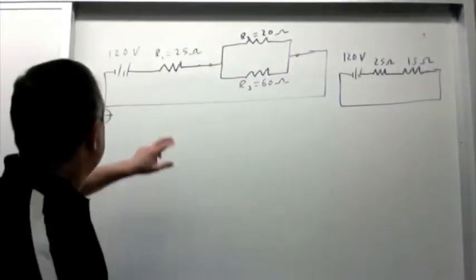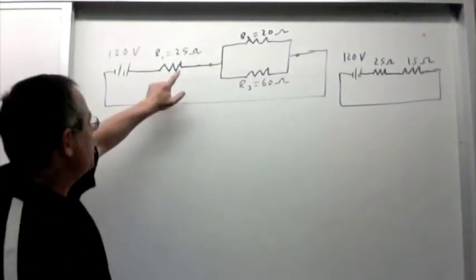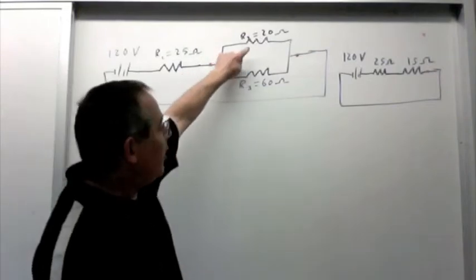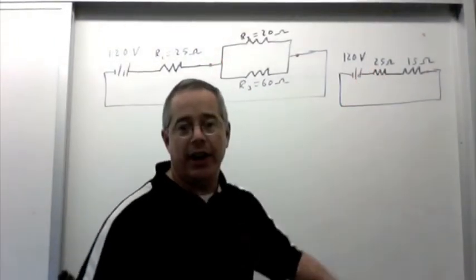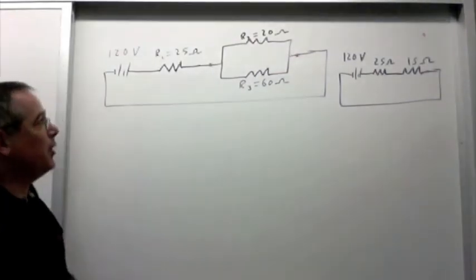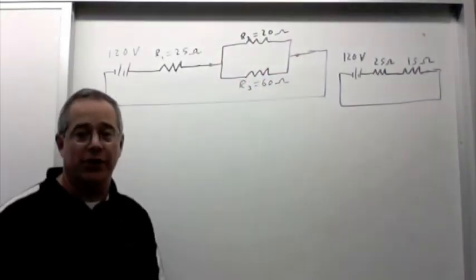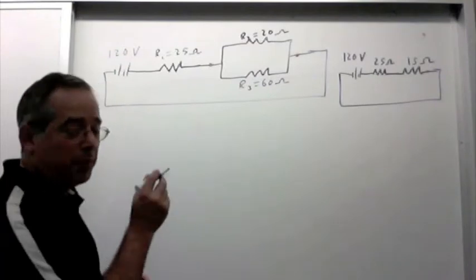I hope you can see this. This is a 120 volt battery, a 25 ohm resistor, and then in parallel, a 20 ohm and a 60 ohm resistor. Don't worry about this thing right now. The first thing to do is to find the total resistance of the two parallel resistors. So we use the parallel formula.